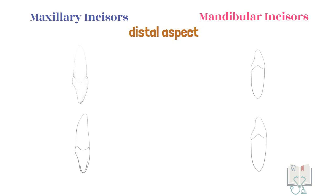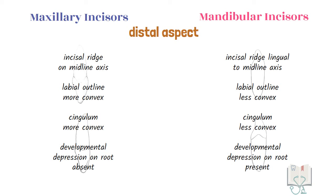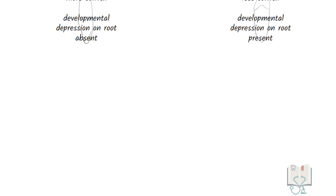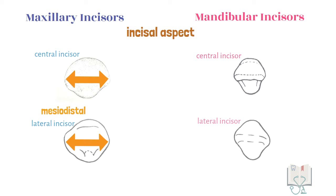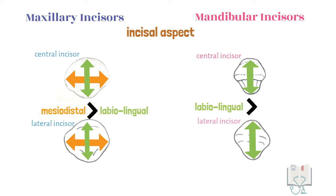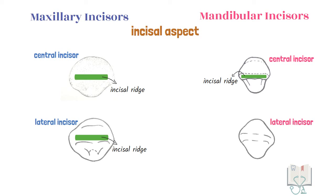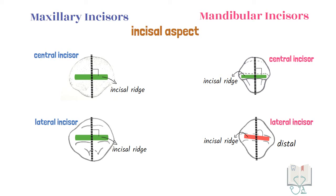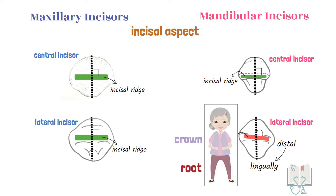All the differences seen from the mesial aspect are also seen from the distal aspect. Finally, from the incisal aspect, in maxillary incisors the mesiodistal diameter is more than the labiolingual diameter, whereas in mandibular incisors the labiolingual diameter is more than the mesiodistal diameter. In all incisors the incisal ridge is horizontal and perpendicular to the labiolingual axis, except in the mandibular lateral incisor, in which the incisal ridge is not at 90 degrees as the distal side tilts lingually. This is due to a twist present in the crown of the mandibular lateral incisor.